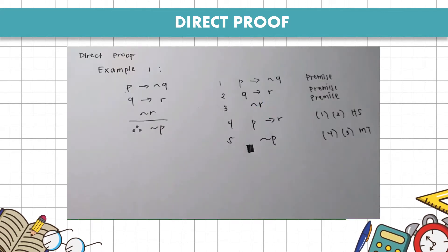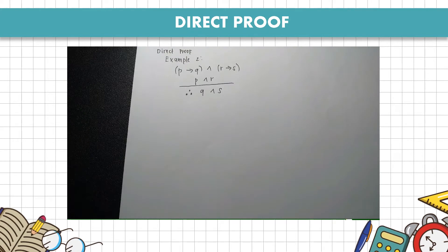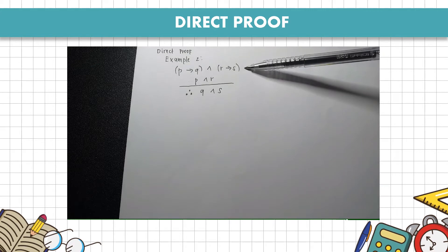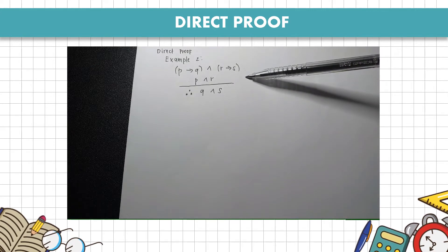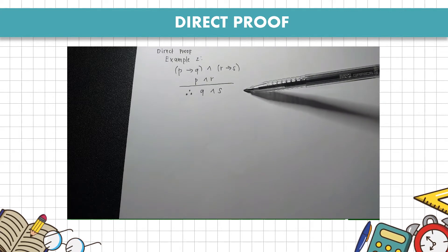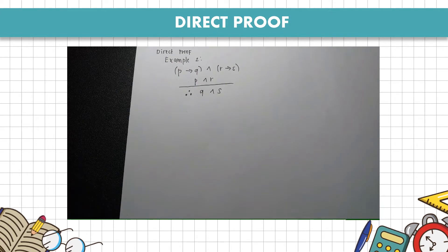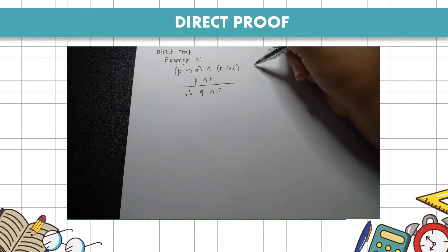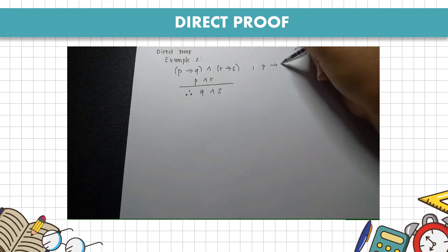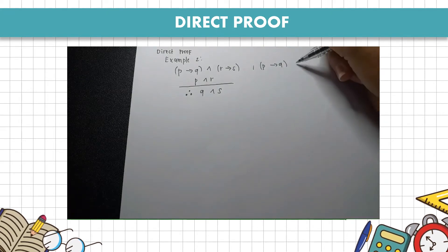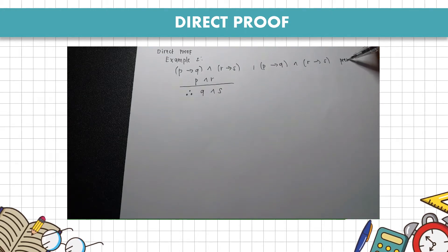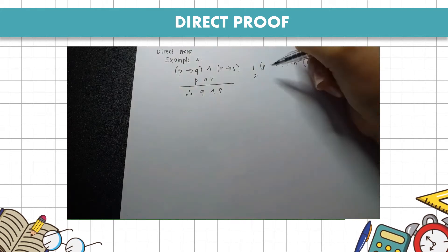For example number 2, we have 2 premises. The first premise is P implies Q and R implies S. The second premise is P and R. We want to prove the conclusion Q and S. Just like in example 1, we first rewrite our premises.